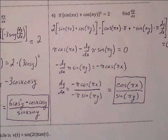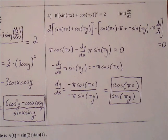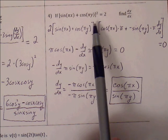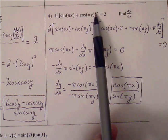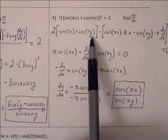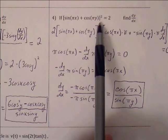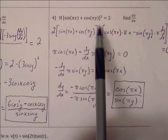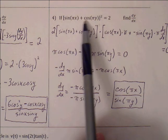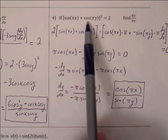Number four: find dy/dx if sine(pi x) plus cosine(pi y), quantity squared, equals 2. We have everything raised to the second power, so chain rule first: bring down the 2, keep everything inside the bracket, subtract 1 from the exponent to get power 1, times the inside function's derivative. So we find the derivative for sine(pi x) and cosine(pi y).